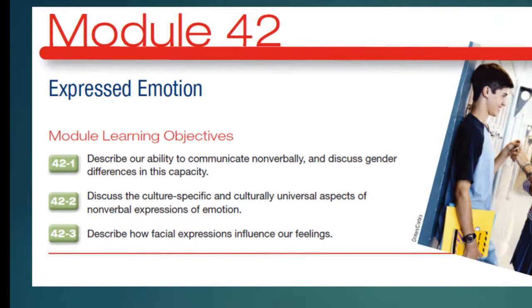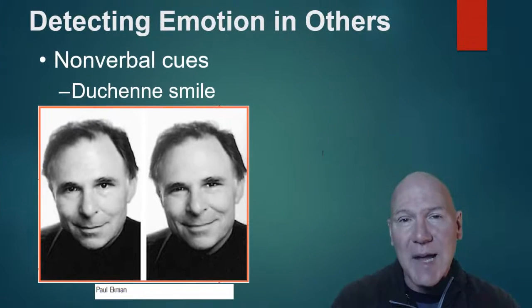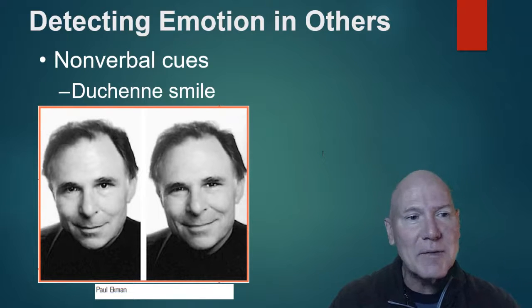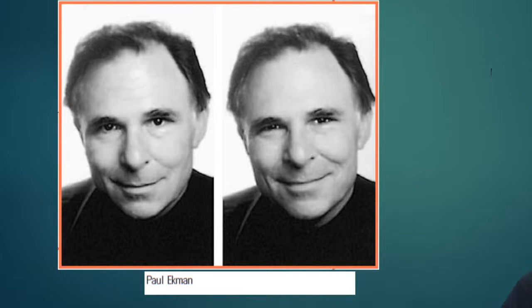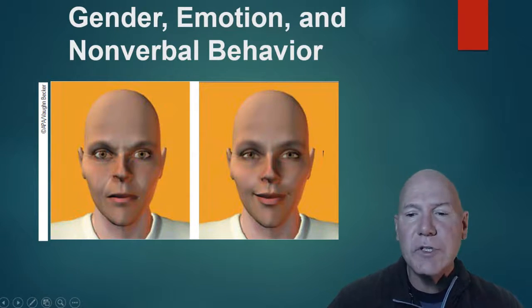Expressed emotion is how we communicate non-verbally, and this goes back to Darwinian ideas — emotional communication was pre-lingual, and these systems are the same across all cultures. For example, the Duchenne smile shows genuine delight. Can you tell which is the real smile and which is the fake? The real smile activates involuntary muscles that the fake smile does not — you can really see it around the eyes.